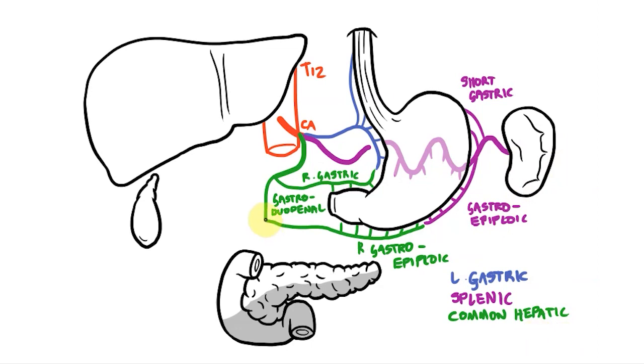The other vessel supplies the upper portions of the pancreas and duodenum, and this is the superior pancreaticoduodenal artery.